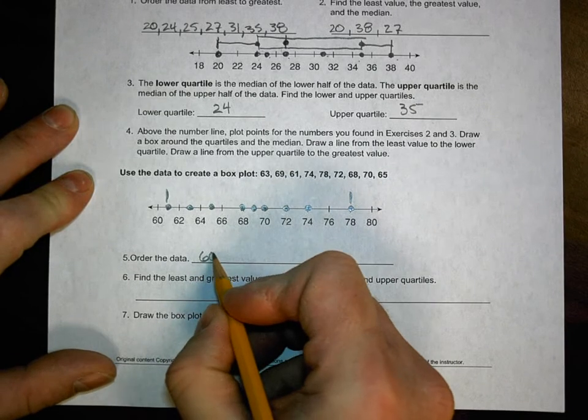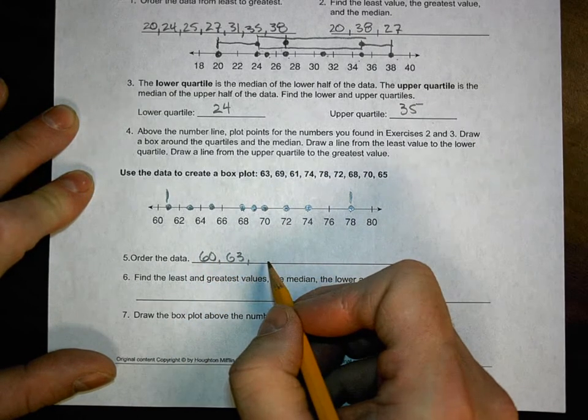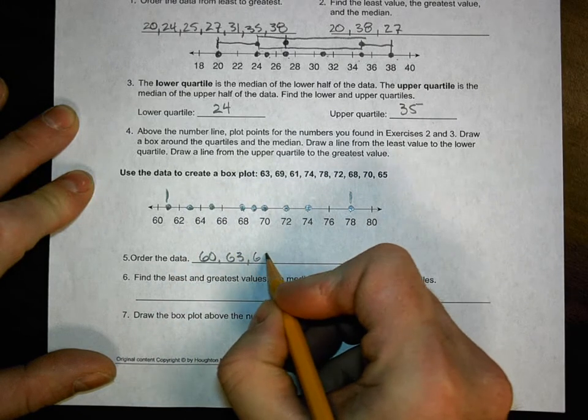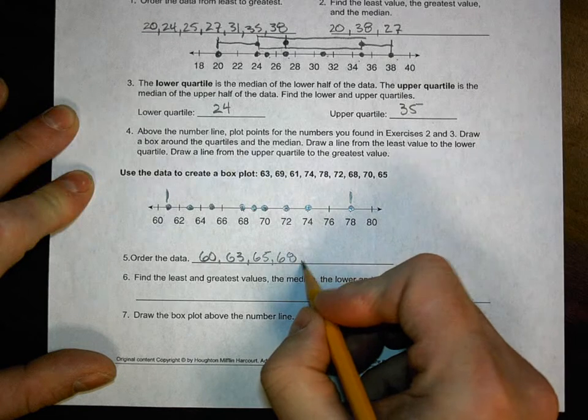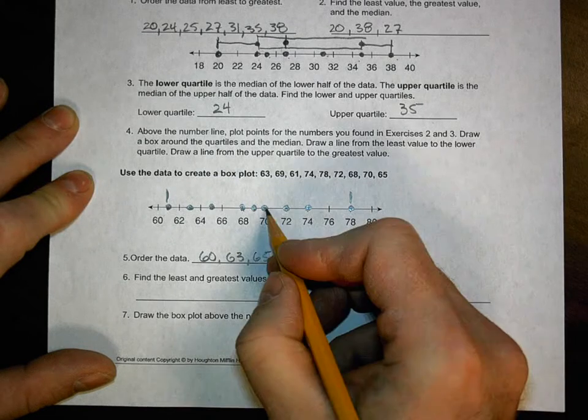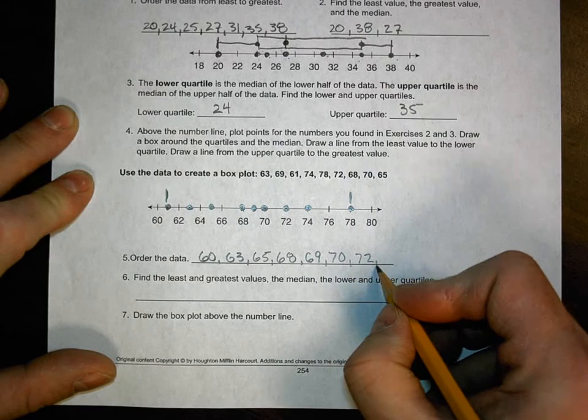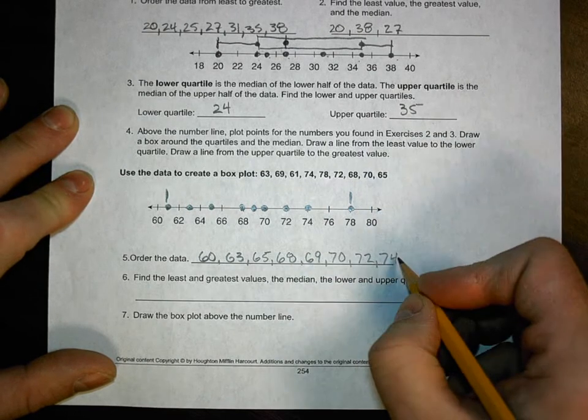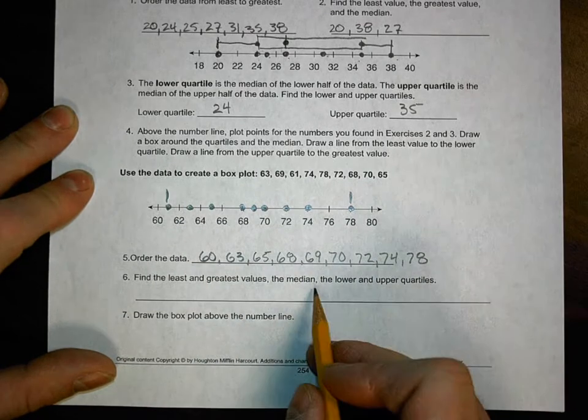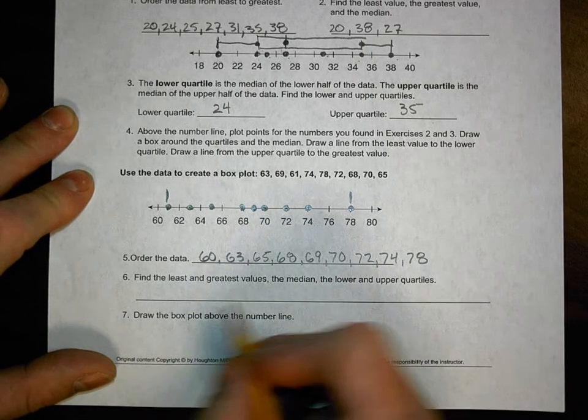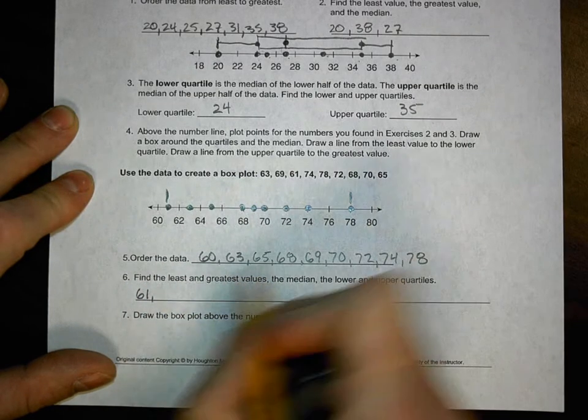So now that I've got them up there, 60, 63, 61, 65, 68, 69, 70, 72, 74, and 78. So we're going to find the least and greatest values, the median and the lower and upper quartiles. So the first one, the least value was 61. The greatest value was 78.